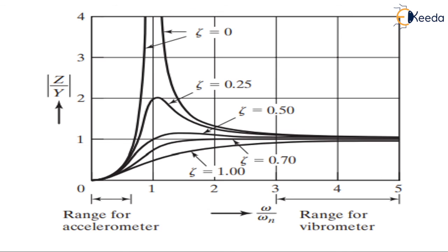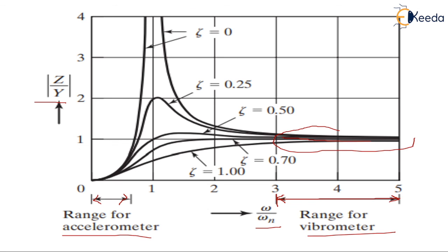If we divide z by y and plot z/y against ω/ωn, we can identify the operating ranges of vibrometers and accelerometers — the two types of seismic instruments. For vibrometers, the range is when ω/ωn is equal to or greater than 3, roughly in the range 3 to 5, where z/y is approximately equal to 1. For accelerometers, the range is 0 to 1, where z/y varies from 0 to about 4. Different damping factors ζ give different graph curves. In another video we will discuss vibrometers and accelerometers in more detail.